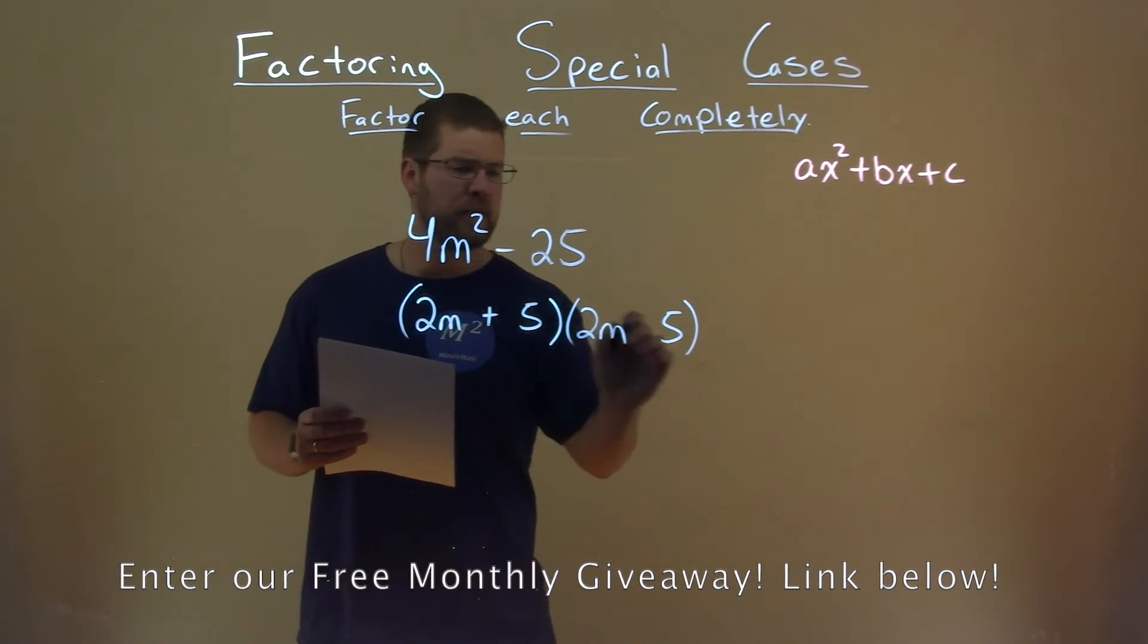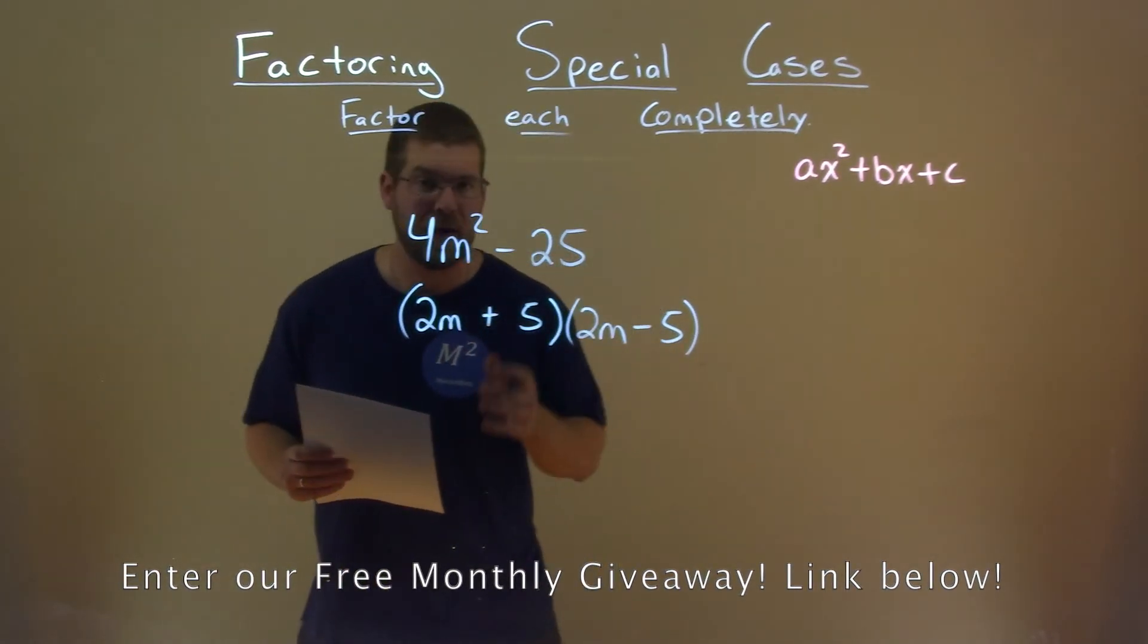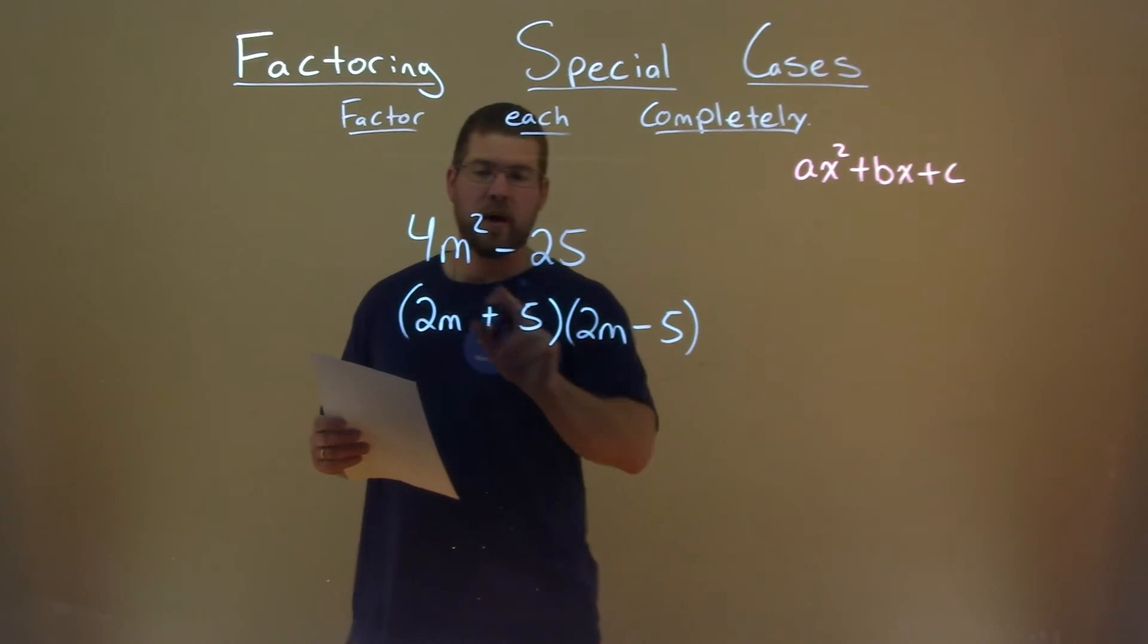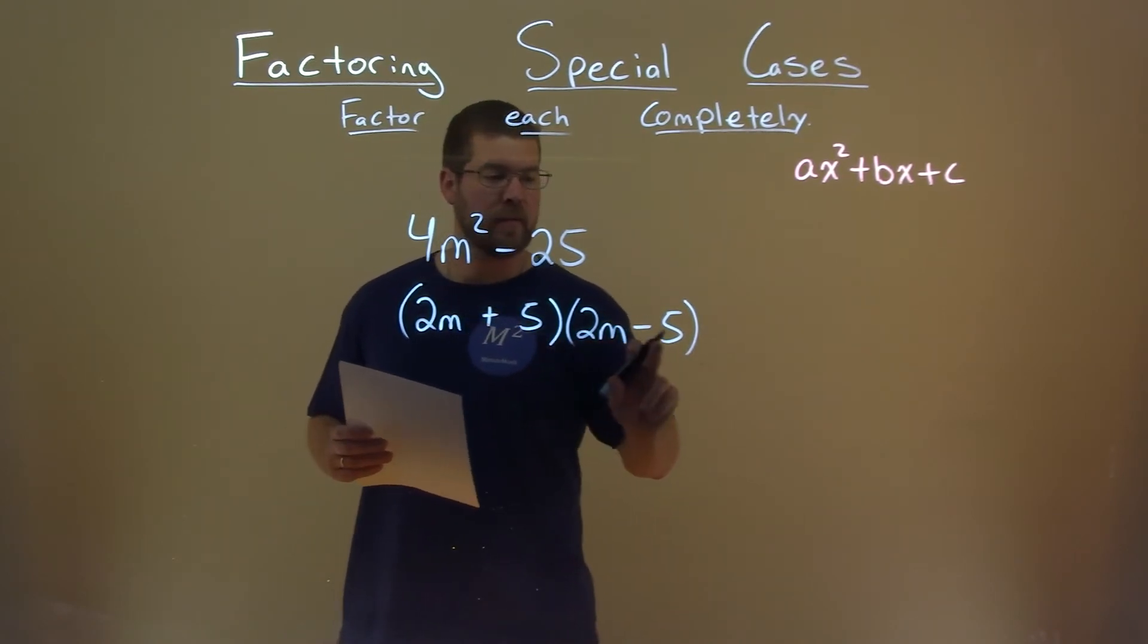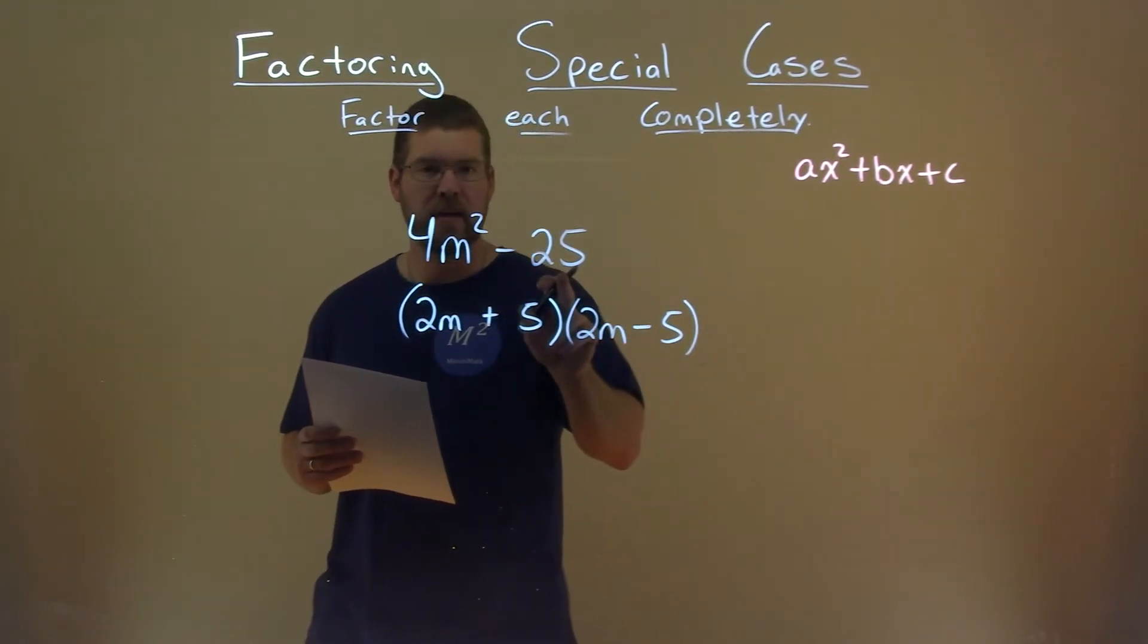If we do a plus and then a minus right here, we actually have our answer. Notice, 2m, again, times 2m is 4m squared. 5 times a negative 5 gives you that negative 25.